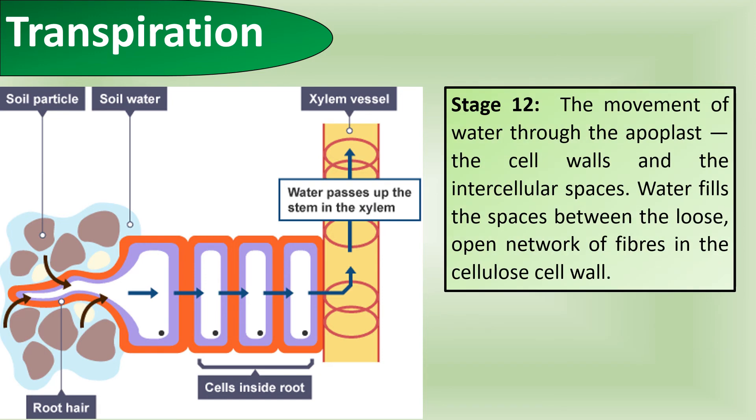The movement of water through the apoplast pathway—the cell walls and the intercellular spaces—is where water fills the spaces between the loose open network of fibers in the cellulose cell wall. It's important to remember that the apoplast pathway is under no control. The cells aren't physically controlling it, unlike the symplast pathway where the water is moving through the cells, so the cells do have some control over it.